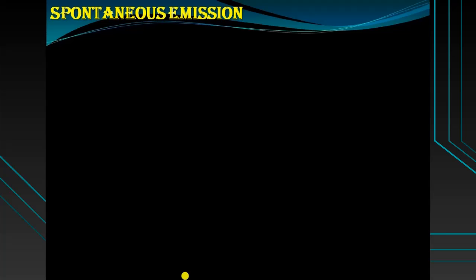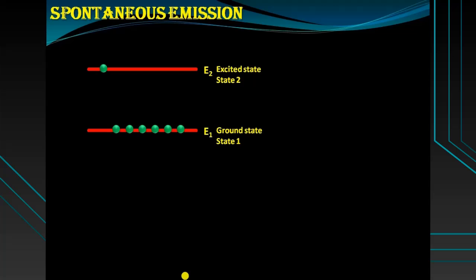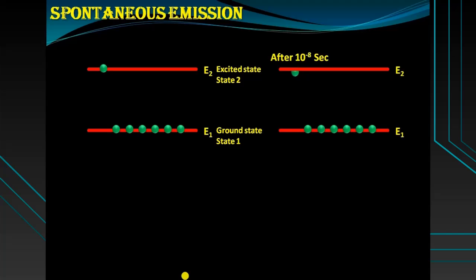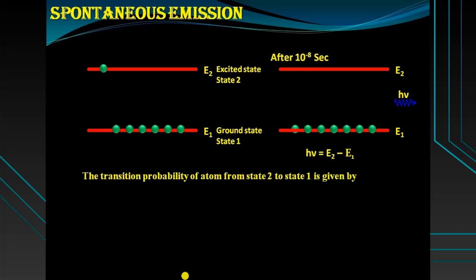What is spontaneous emission? The emission of radiation when an electron falls back to the ground state without any external influence is called spontaneous emission. If the electron is in the excited state, it cannot stay there for a long period — after around 10 to the power minus 8 seconds, it falls back to the ground state by releasing a photon of energy hν equal to E2 minus E1.